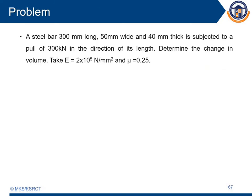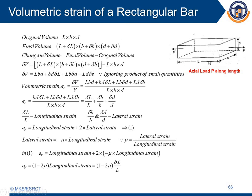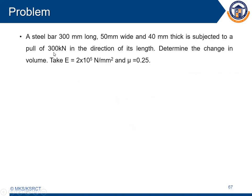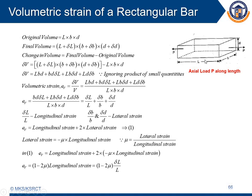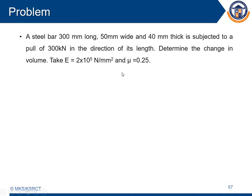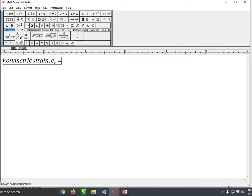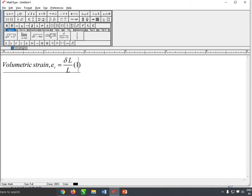Let us solve a problem. The length of the steel bar is 300 mm, width is 50 mm, and thickness is 40 mm. A load of 300 kN is applied in the direction of length. We are asked to calculate the change in volume. The volumetric strain Ev equals δL/L into (1 minus 2·mu), where δL/L is the linear strain. First, we need to find the change in length.